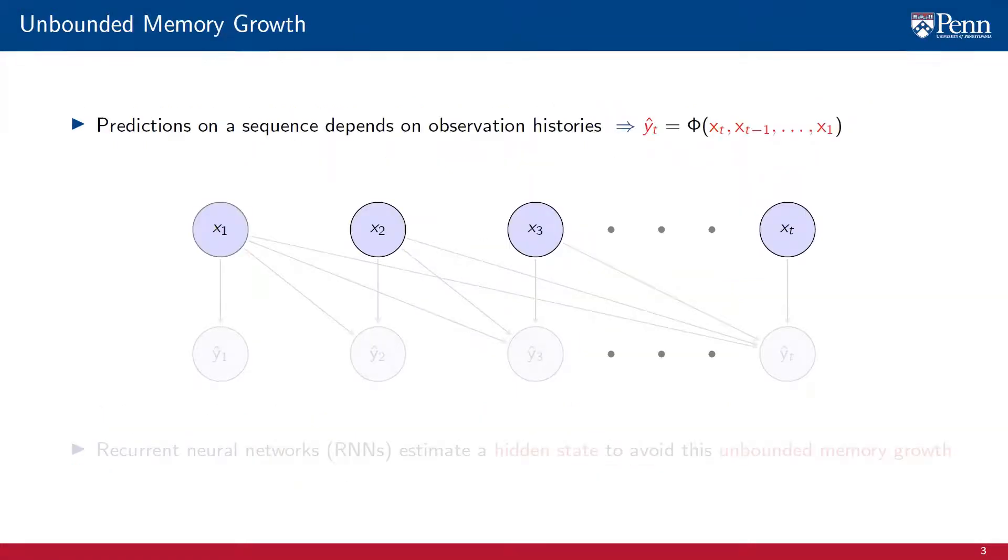The challenge with making predictions on a sequence is memory growth. Predictions on a sequence of observations depend on the complete history of the process. As the iteration index Xt grows, the number of observations in which we base our predictions also grows. At time 1, we observe input X1 and make prediction Y1 hat. This is the problem we have studied thus far. It can be easy or difficult, depending on the dimensionality and structure of X1.